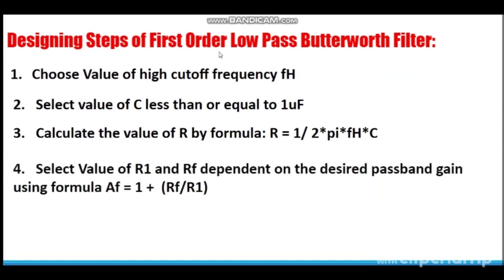Now these are the designing steps of first order low pass Butterworth filter. Choose value of high cutoff frequency FH - this will be given to you in the question. Select value of C less than or equal to 1 microfarad. You can set the value of C any value which will be less than 1 microfarad. Then calculate the value of R by formula R equals to 1 upon 2 pi FH into C. We have just simply rearranged the formula of high cutoff frequency. And then select the value of R1 and Rf depending on the desired pass band gain using formula AF equals to 1 plus Rf upon R1. Gain will be given and on the basis of gain you need to select the values of R1 and Rf. And then finally after following all these steps you need to draw the circuit diagram.